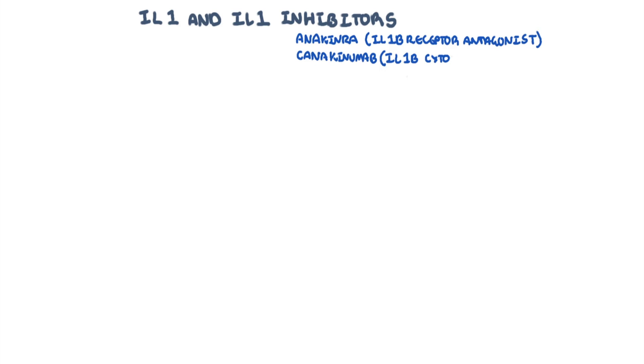These interleukin-1 inhibitors include anakinra as well as canakinumab. Now, there are many types of interleukin-1 cytokines, but the most well-known is interleukin-1b, which plays an important role in inflammation.